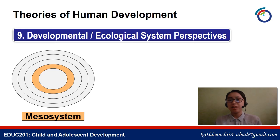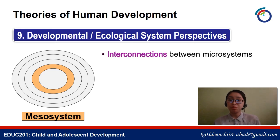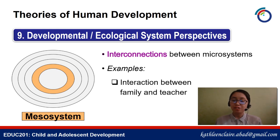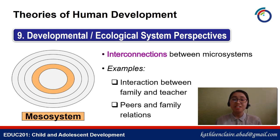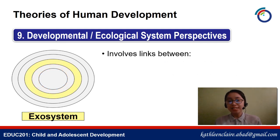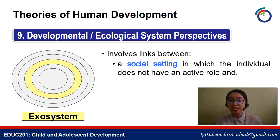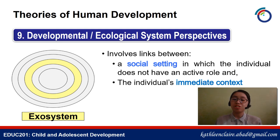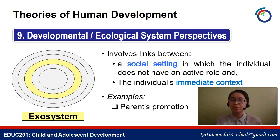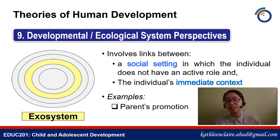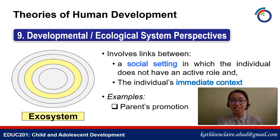Next is the mesosystem — the interconnections or relationships between microsystems, for example the interaction between family and teacher, or peers and family relations. Then we have the exosystem, which involves links between a social setting in which the individual does not have an active role and the individual's immediate context. For example, the parents' relationship with each other — if it is on rocky ground, this may result in increased conflict and possibly change patterns of interaction with the child. The exosystem is also known as the indirect environment.